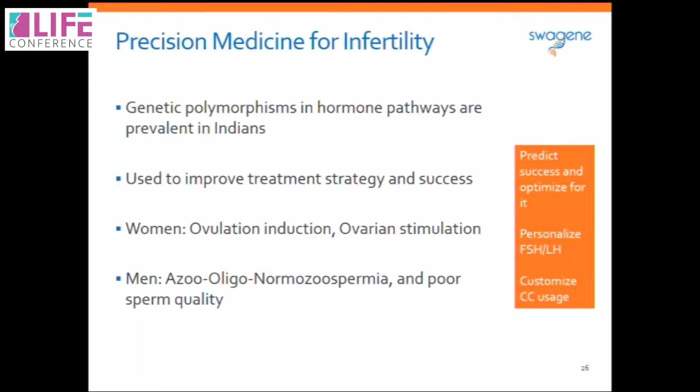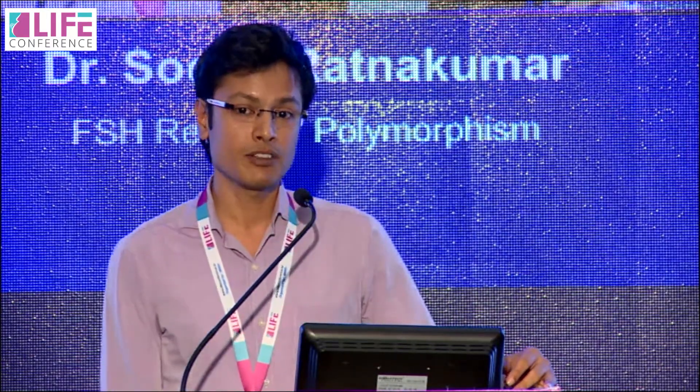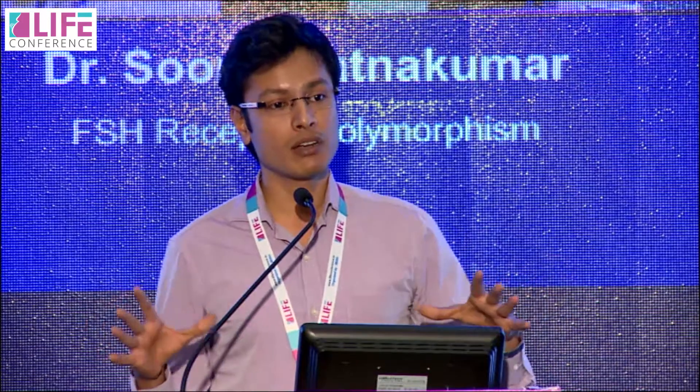To summarize: genetic polymorphisms prevalent globally are also prevalent in the Indian population, and these polymorphisms can be used to improve treatment strategy and success rates — in women prior to ovulation induction and ovarian stimulation using gonadotropins, and in men across the spectrum of sperm count and poor sperm quality. Looking ahead, personalized medicine is also moving toward several obstetric complications, including genetic variations tied to preterm labor, premature rupture of membranes, urinary incontinence, and cervical incompetence — predicting risk in advance to better manage these patients. Thank you very much to Dr. Kamini Rao and thank you for listening.